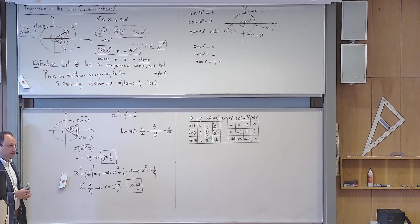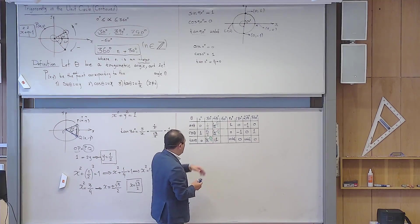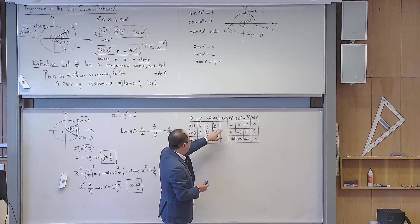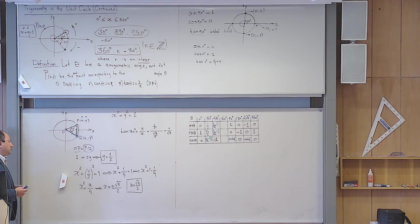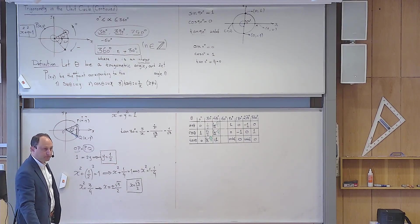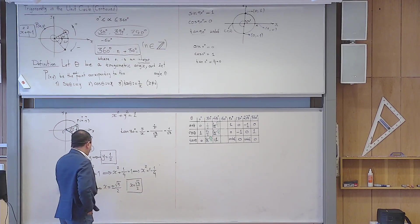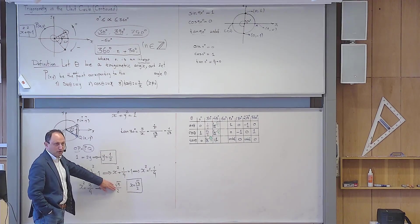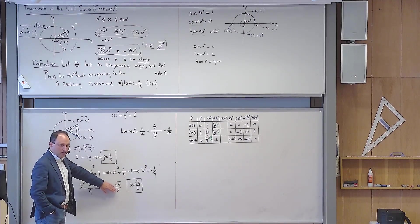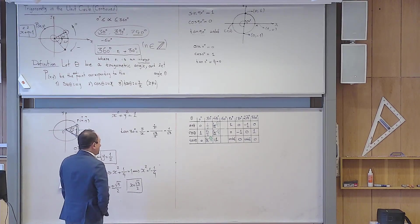So sine of 30 degrees is one-half, cosine of 30 degrees is the square root of three over two, and tangent of 30 degrees is one over the square root of three, or equivalently the square root of three over three. When you get plus or minus in the calculation, on the test you should write in words why you choose only the positive one.